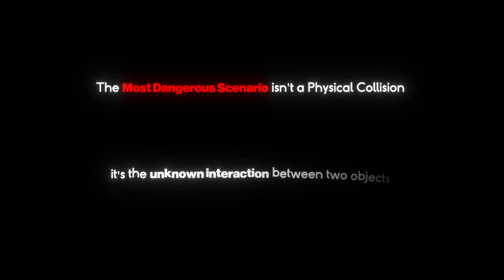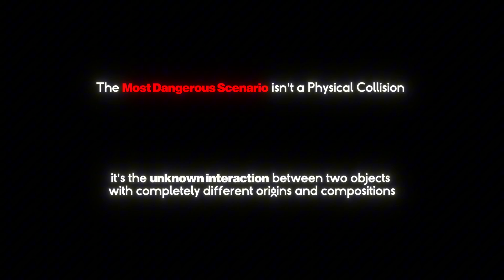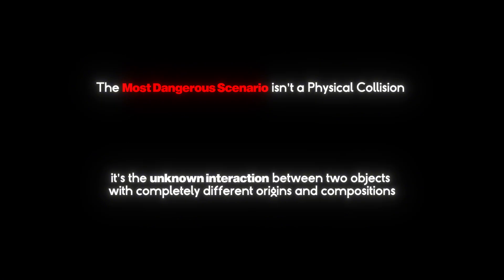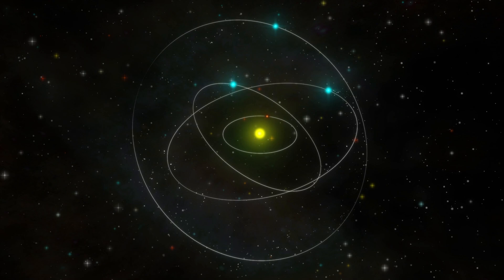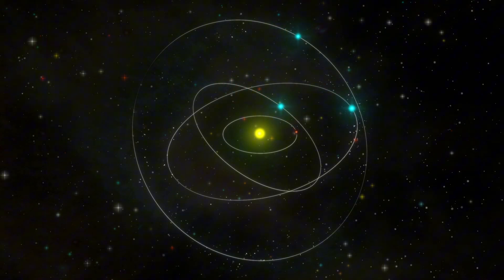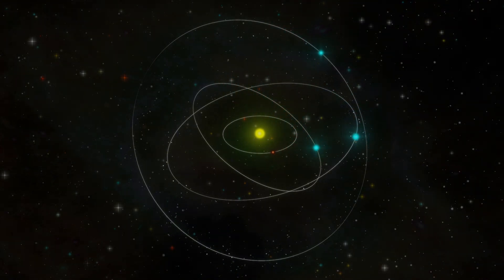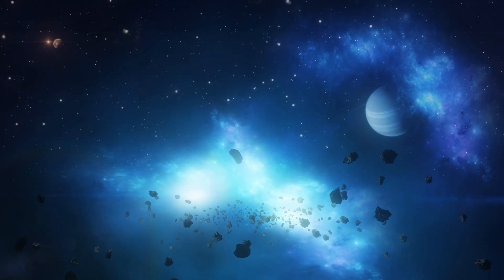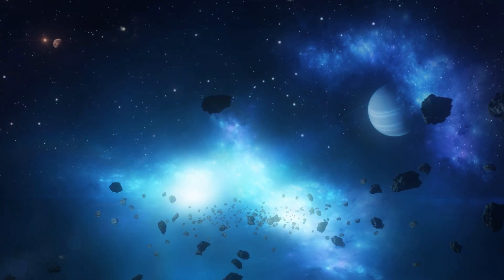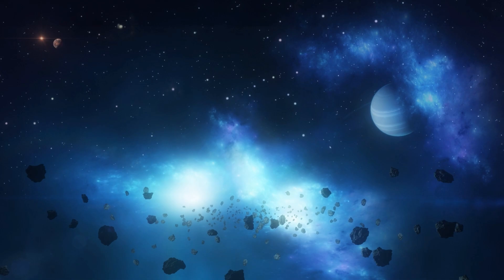The most dangerous scenario isn't a physical collision. It's the unknown interaction between two objects with completely different origins and compositions. When these two objects pass within 31 million miles of each other, we'll witness the first recorded close encounter between an anomalous interstellar visitor and a massive long-period comet. The gravitational forces alone could create trajectory changes that send one or both objects on completely different paths through our solar system.